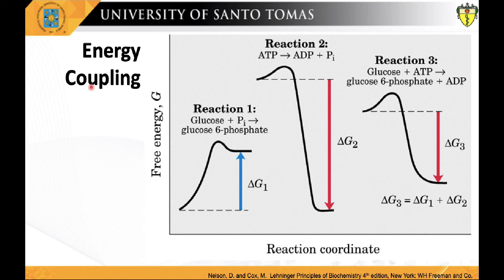Let us now apply this concept biochemically. In reaction 1, the formation of glucose-6-phosphate from glucose and inorganic phosphate yields a product of higher energy than the two reactants. For this endergonic reaction, delta G1 is positive. In reaction 2, the exergonic breakdown of adenosine triphosphate can drive an endergonic reaction when the two reactions are coupled. The exergonic reaction has a large negative free energy change, or delta G2, and the endergonic reaction has a smaller positive free energy change, or delta G1. The third reaction accomplishes the sum of reactions 1 and 2, and delta G3 is the arithmetic sum of delta G1 and delta G2.